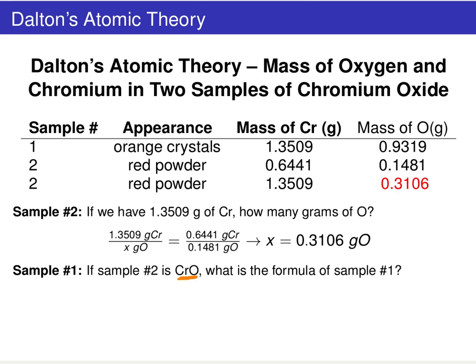We denote that by writing chromium and oxygen with no subscripts — a one-to-one ratio. We want to use that knowledge that sample two is a one-to-one ratio to determine the chemical formula for sample one.